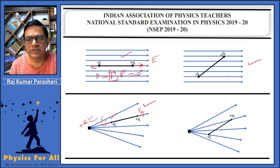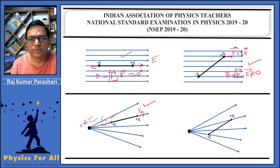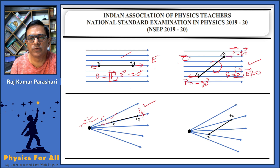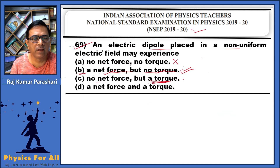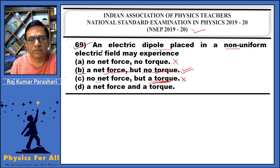Again, this is possible inside a uniform electric field. When you place an electric dipole at an angle theta — where theta is the angle between p vector and E vector — not equal to zero, then the net force on the dipole will be zero. However, there will be torque acting on the dipole, and the torque equals p cross E. Hence option C is correct only if an electric dipole is placed inside a uniform electric field, and so option C is rejected here.